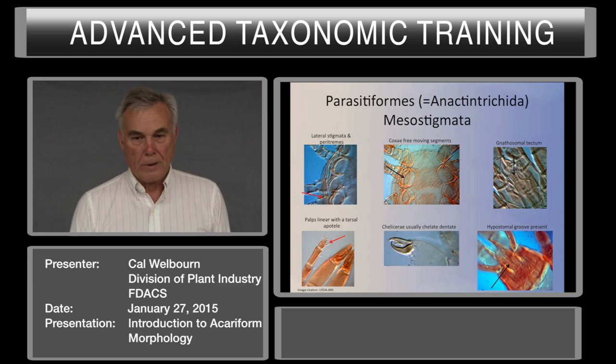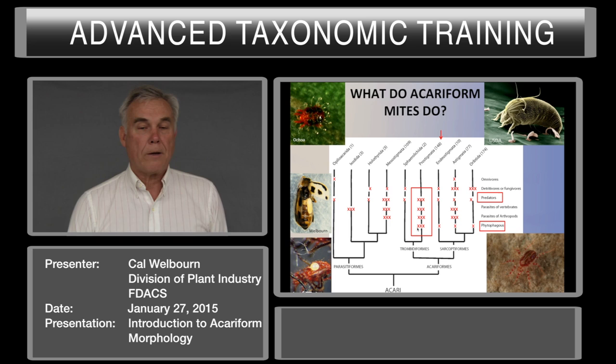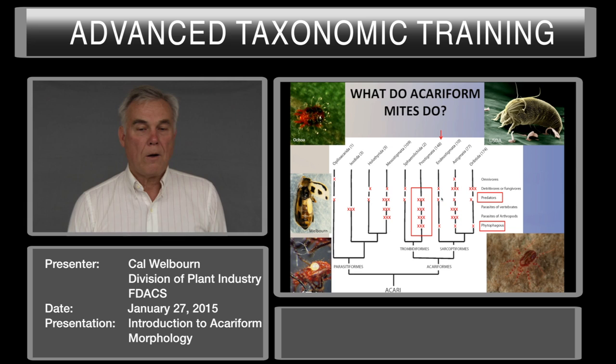Acariform mites: almost all phytophagous mites are in Prostigmata. Some other groups have a few plant-feeding mites, but they're not economically important. Also, a lot of predators found on plants are in the Prostigmata.